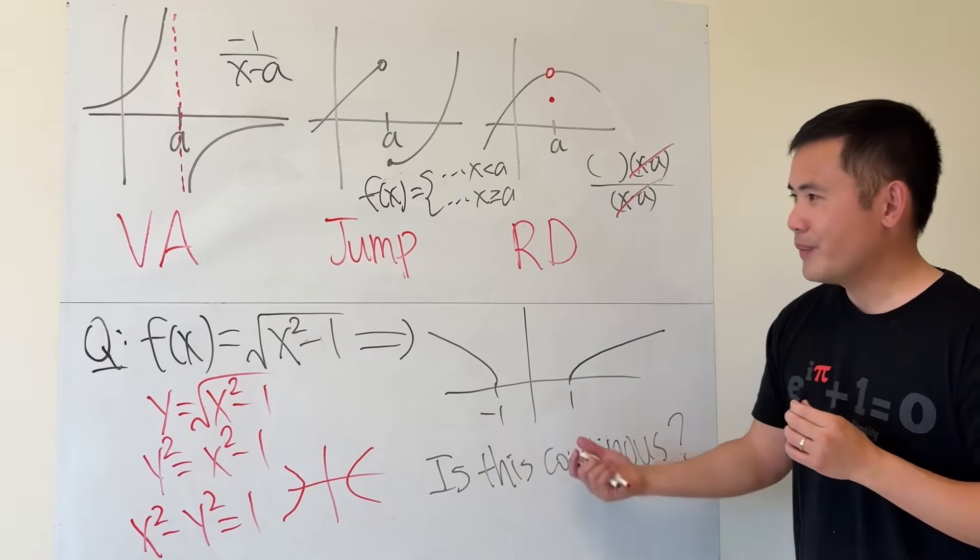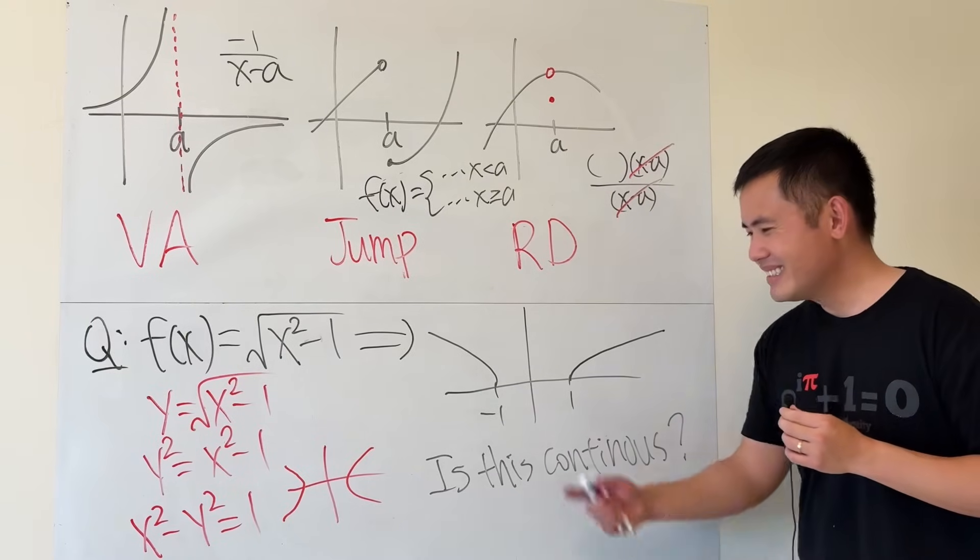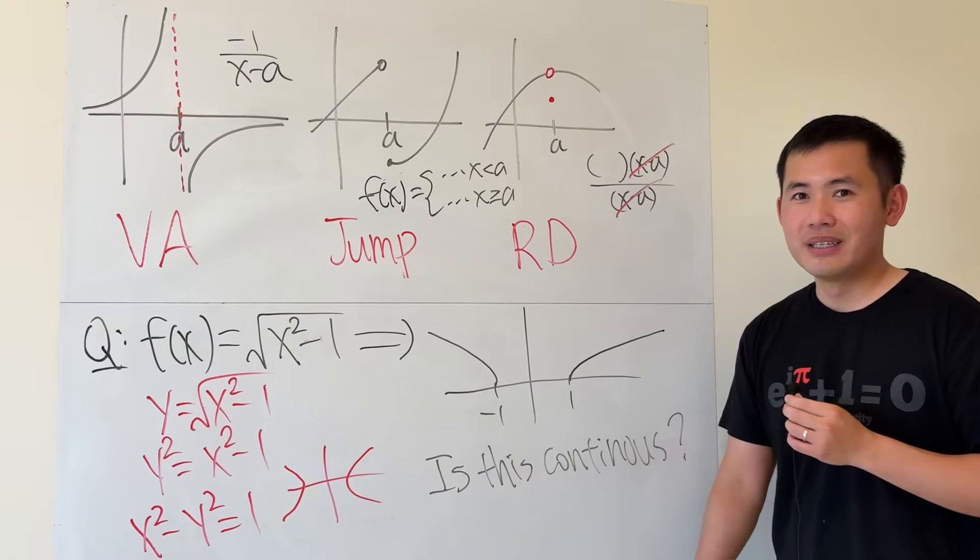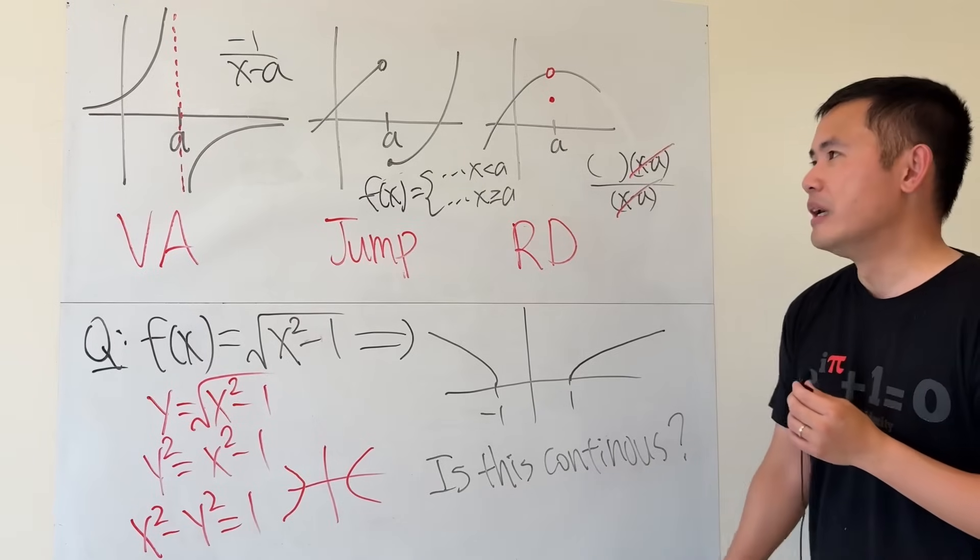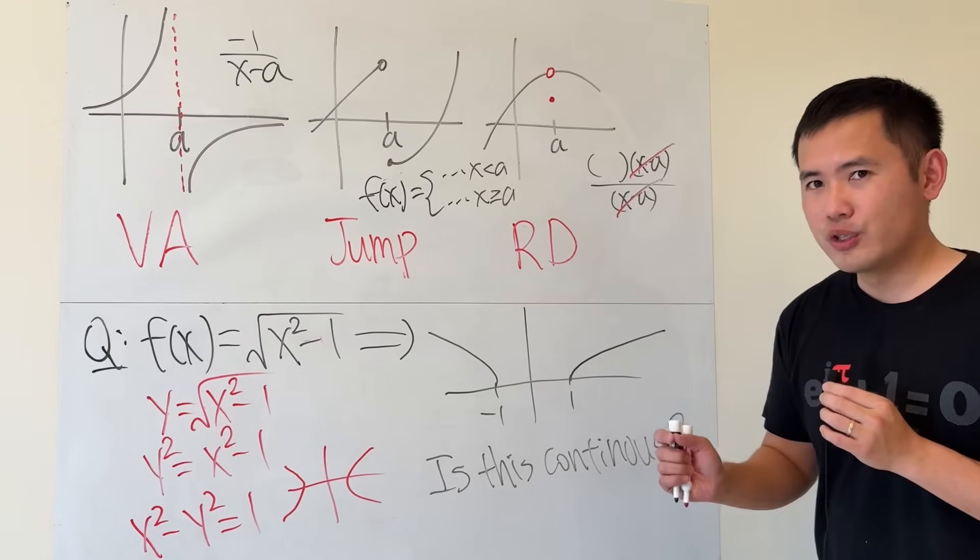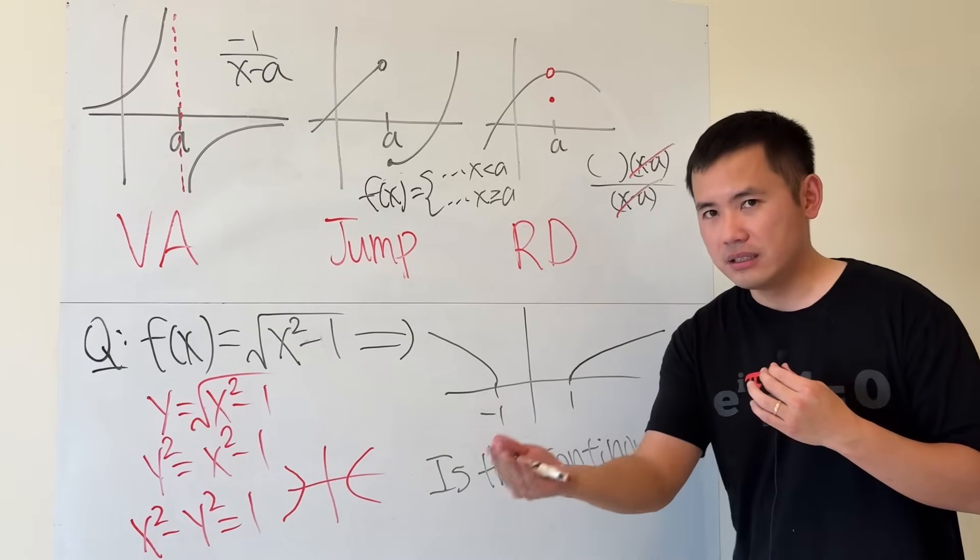No, I don't think so. What do you guys call this? Is this continuous? I don't know. But if you go back to the logic that we have been using, if the graph of the function is not connected, then it's not continuous.